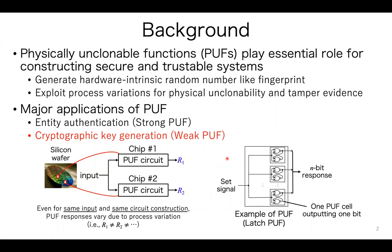In contrast, weak PUF has a limited input space. Latch PUF is a typical example of weak PUF. This figure shows an n-bit latch PUF. The input of this latch PUF is given by only a set signal, and the latch PUF consists of n latches to generate an n-bit response. Such weak PUFs are mainly used for cryptographic key generation. In this talk, we focus on key generation based on weak PUFs.